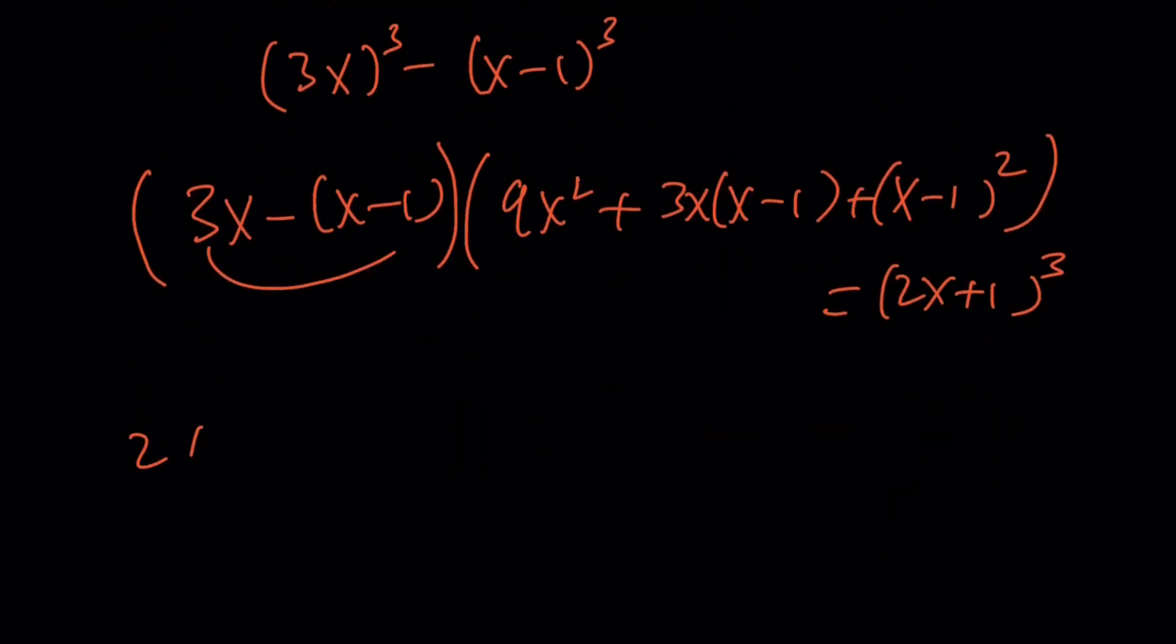And then, this one gives us 9x squared, plus x squared is going to be 10x squared. Oh, I think we're going to get another one. 3x squared, 9 plus 3 is 12, 12 plus 1 is 13. So, we should get 13x squared.